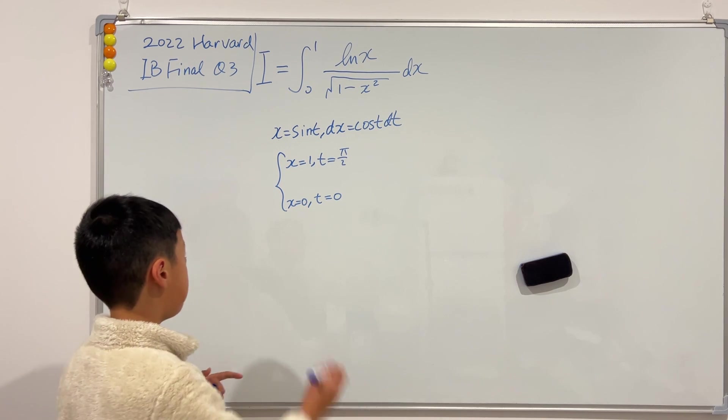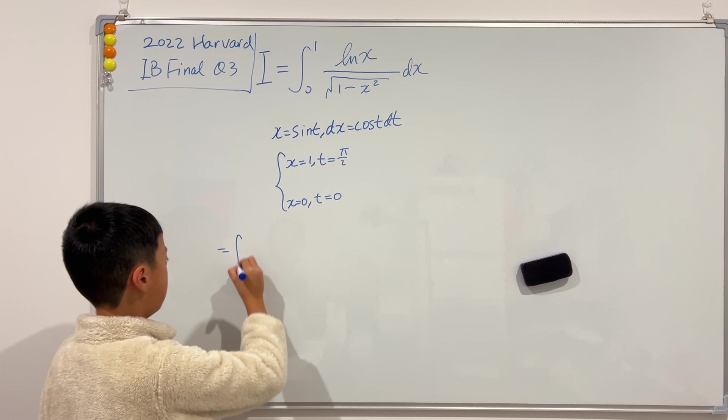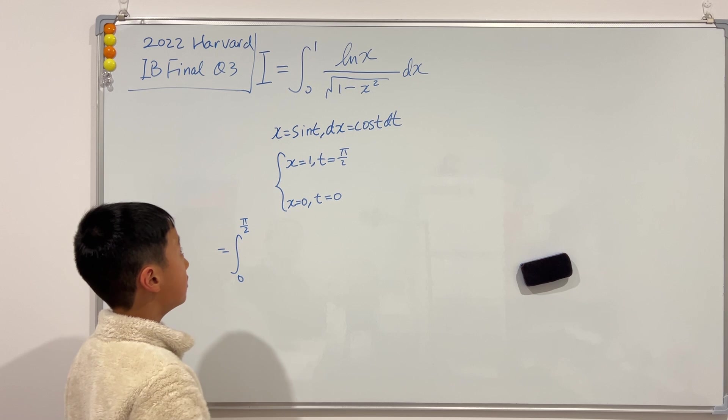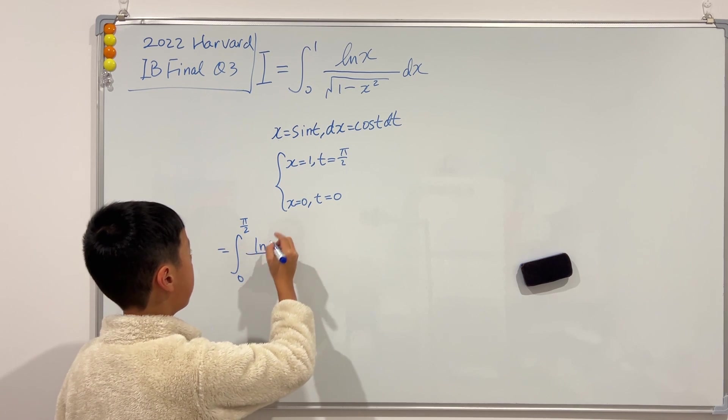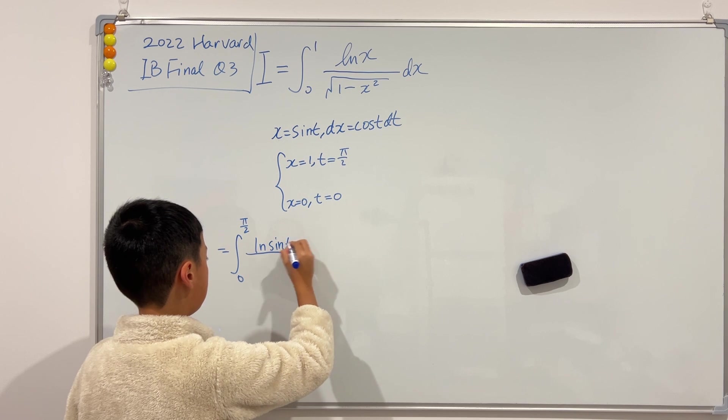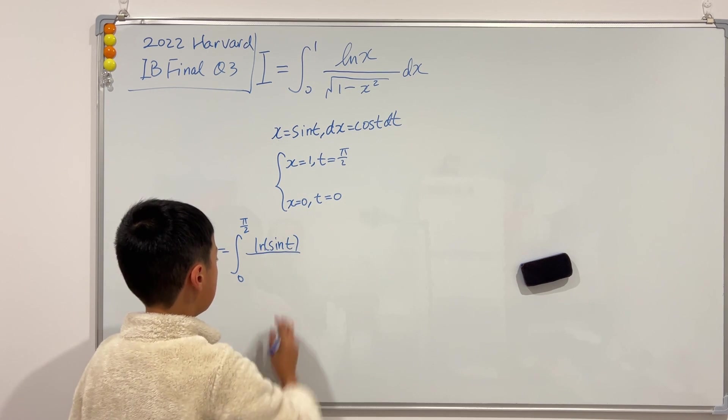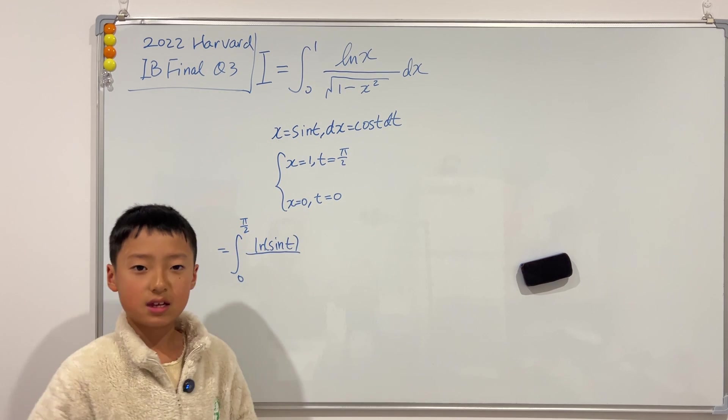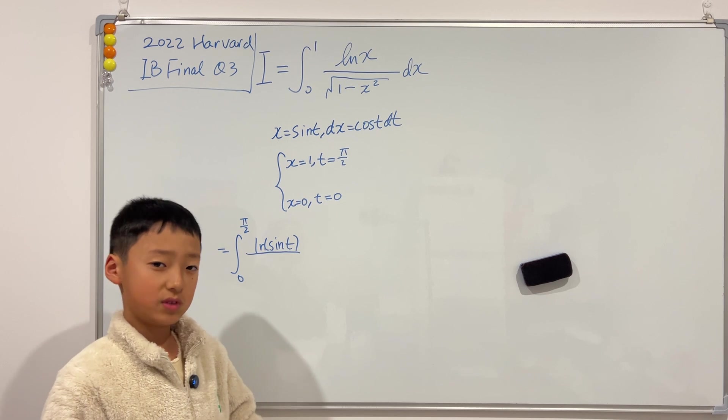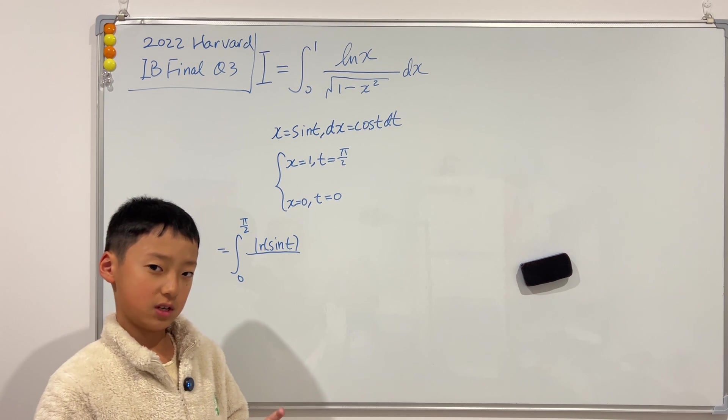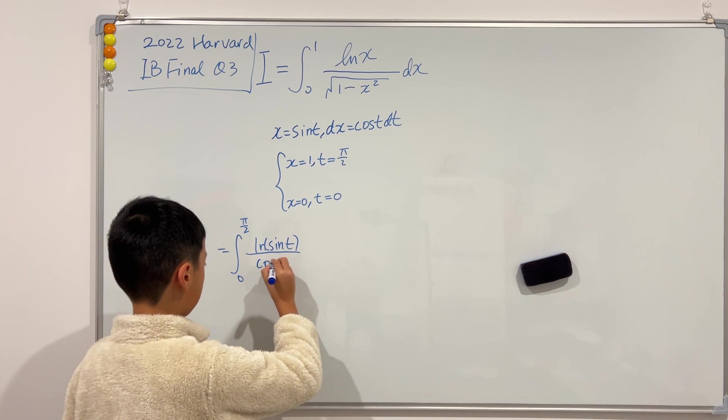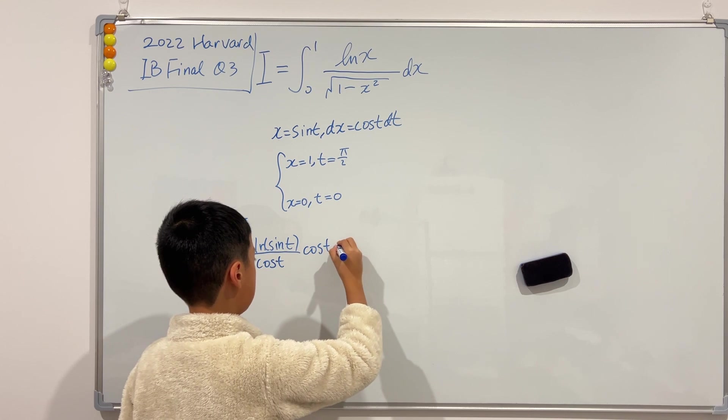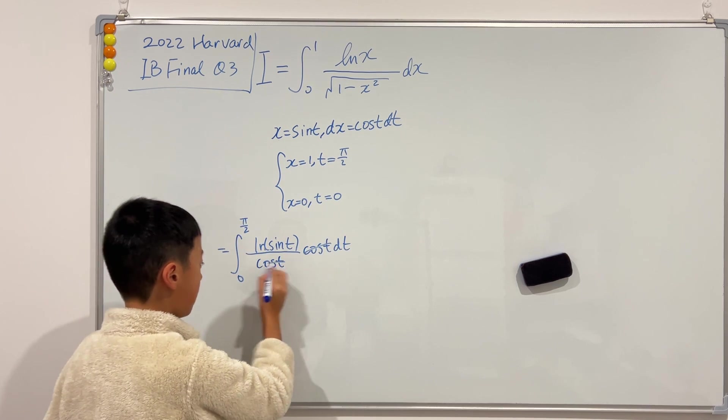So our new integral would just be the integral from 0 to π over 2 of ln of x, which is sine of t. And in the bottom, if we plug in x is equal to sine of t, then we have square root of 1 minus sine squared of t. That is cosine squared of t. Take the square root, just cosine of t. And the dx, which is cosine of t dt. And look, cancel, cancel.